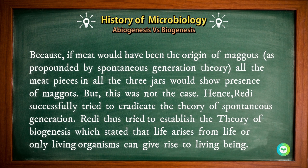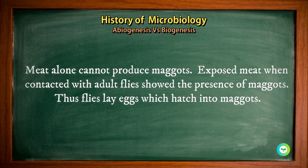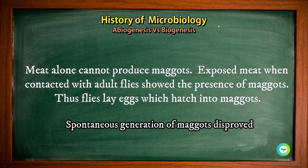Because if the meat had been the origin of maggots, as propounded by the spontaneous generation theory, all the meat pieces in all three jars would show the presence of maggots — but this was not the case. Hence, Redi successfully disproved the theory of spontaneous generation. Redi thus established the theory of biogenesis, which states that life arises from life, and only living organisms can give rise to living beings. Meat alone cannot produce maggots; exposed meat, when contacted with adult flies, shows the presence of maggots because the flies lay eggs which hatch into maggots.